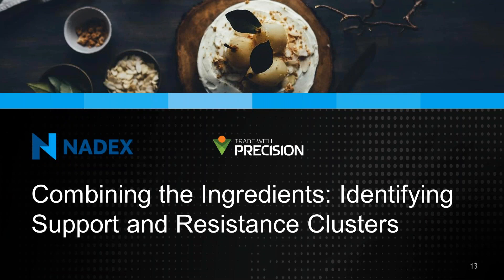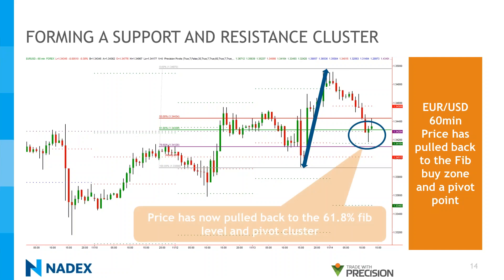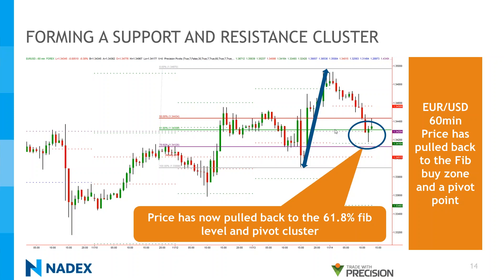Now let's put everything together and build a trade idea. Here we have a 60-minute chart on the Euro-dollar, and we're getting the third pullback into the buy zone right here. We draw those Fib lines going in the direction of the trend — which is up — from the swing low to the swing high. That sets up our sweet spot pullback right here between the 50 and the 61.8% level. We have a cluster around the 61.8% level with some price congestion there, a number of support levels that we're looking at.